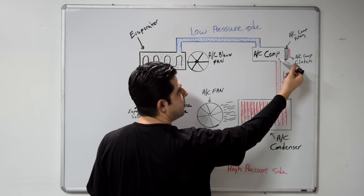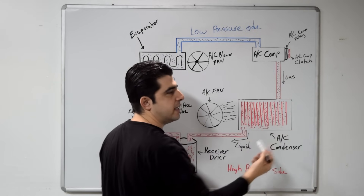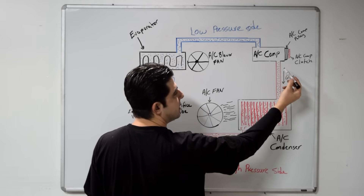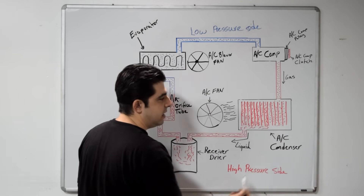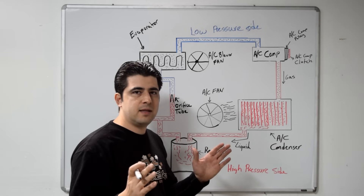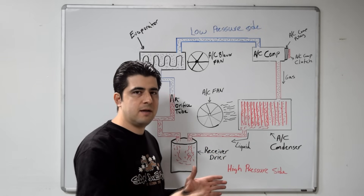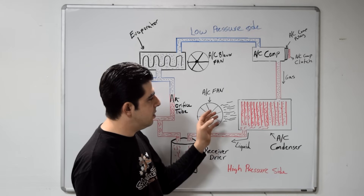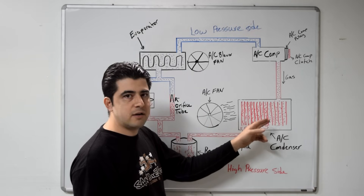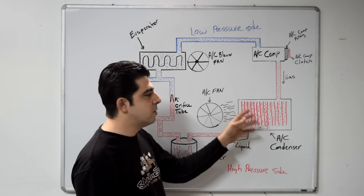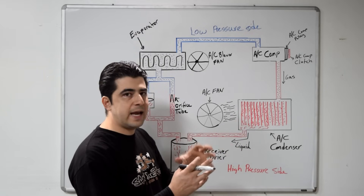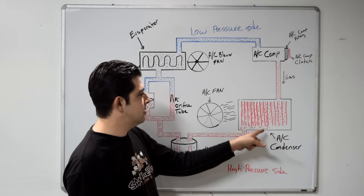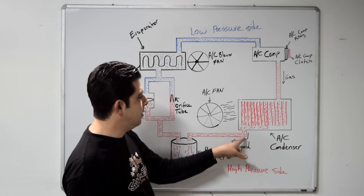As you compress the refrigerant and push it out of your compressor, the refrigerant is going to be in a gas state. After your AC compressor, that refrigerant in a gas state travels to your AC condenser — the radiator-looking thing in front of your car, usually in front of the radiator itself. Your AC fan blows air over the condenser, cooling the refrigerant down. As you cool down pressurized refrigerant in a gas state, it turns into a liquid. Once the refrigerant leaves your AC condenser, it will be in a liquid state.